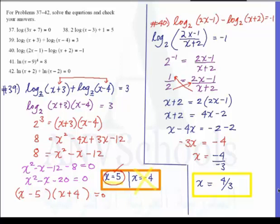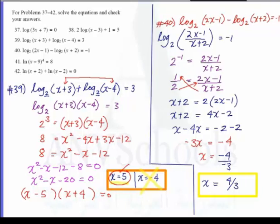Let us verify: substituting x equals 4 over 3 into number 40, 2x becomes 8 over 3, so log base 2 of 8 over 3 minus 1 minus log base 2 of 4 over 3 plus 2 gives a value of negative 1. Therefore this is correct, and x equals 4 over 3 is the solution set for number 40.